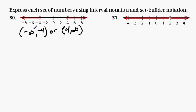That's interval notation. Set builder notation would be as follows. The set of all numbers x such that x is less than negative 4 or x is greater than 4 and x is an element or a member of the real number set.